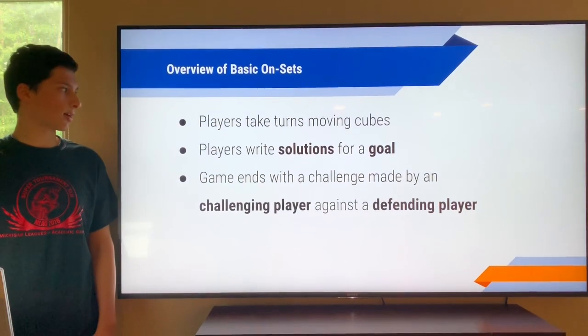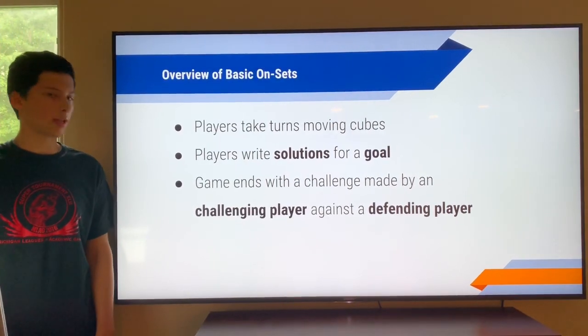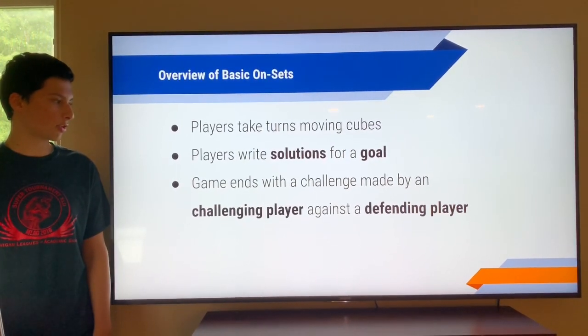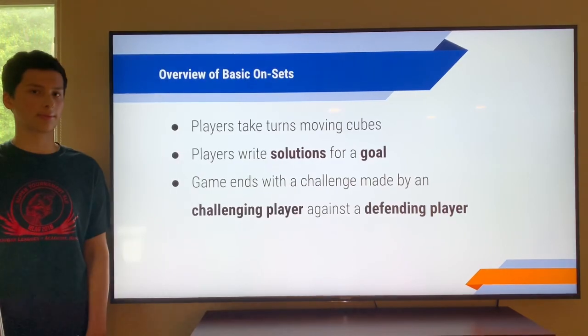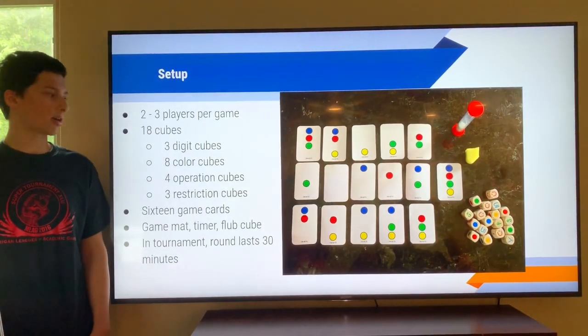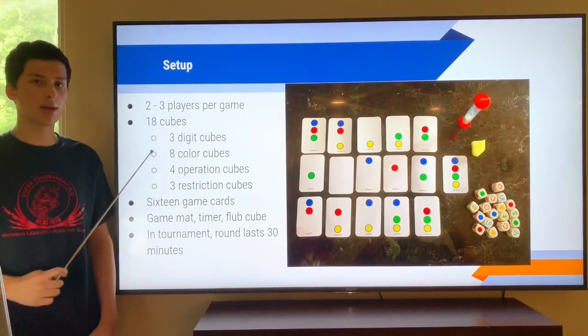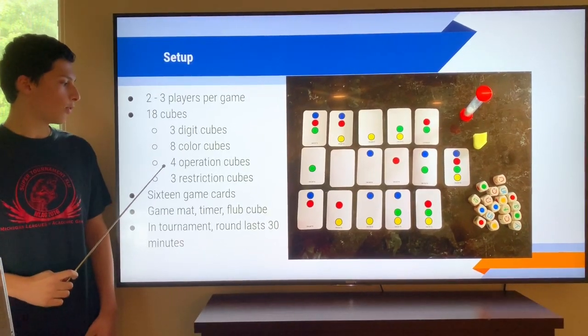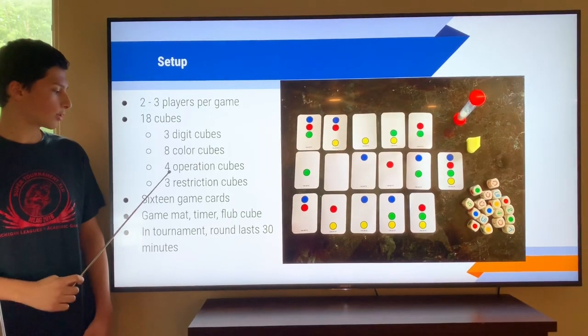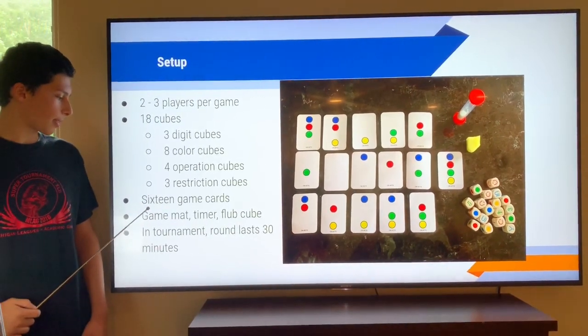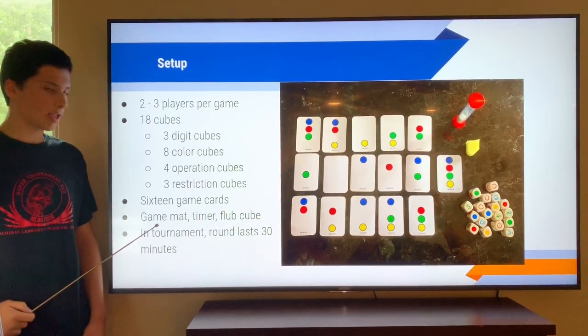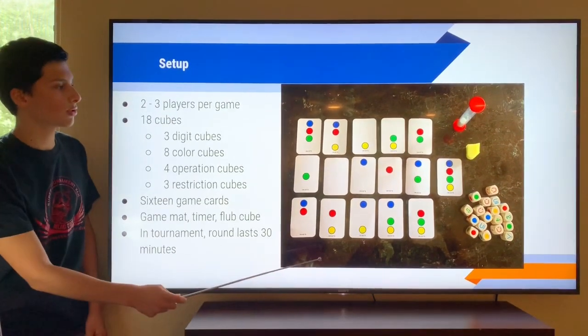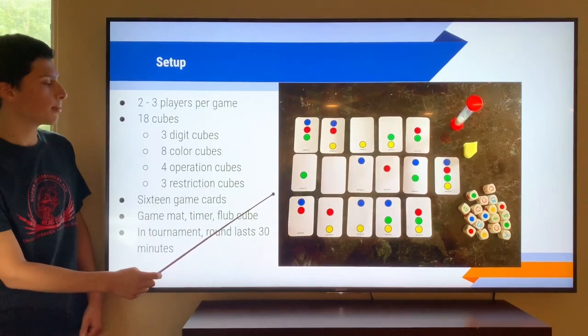So an overview of Basic Onsets. In this game, players take turns moving cubes. Players have to write solutions for a goal that is determined at the beginning of a round. The game ends with a challenge that is made by a challenging player against a defending player. In your game box, you should have 18 cubes consisting of 3 digit cubes which have numbers from 1 to 5, 8 color cubes with the colors green, blue, red and yellow, 4 operation cubes, and 3 restriction cubes. You should have 16 game cards as well, and a game mat, timer, and club cube. In the tournament, the round lasts 30 minutes and the game is played between 2 and 3 players. This is an example of what your game set might contain.